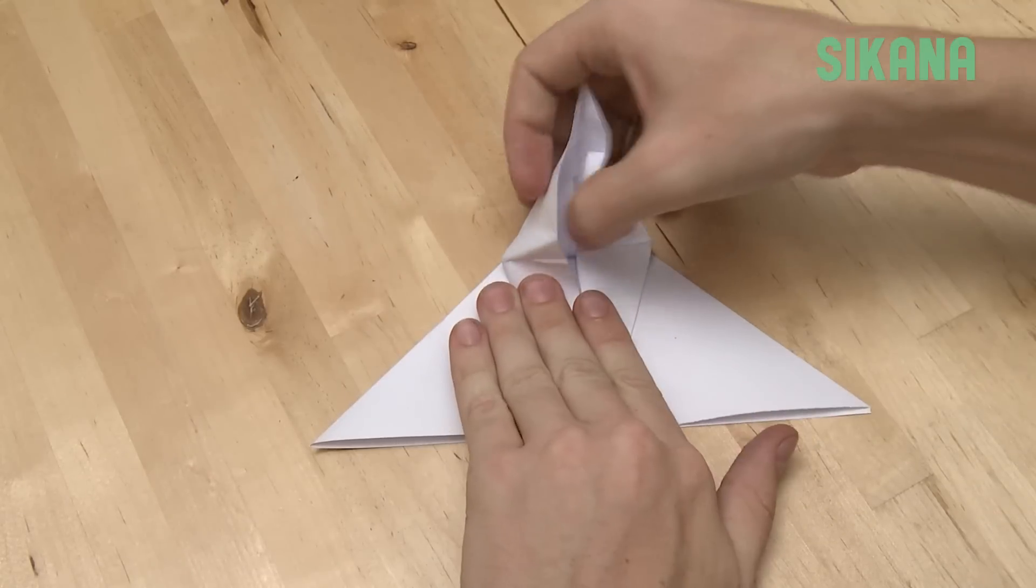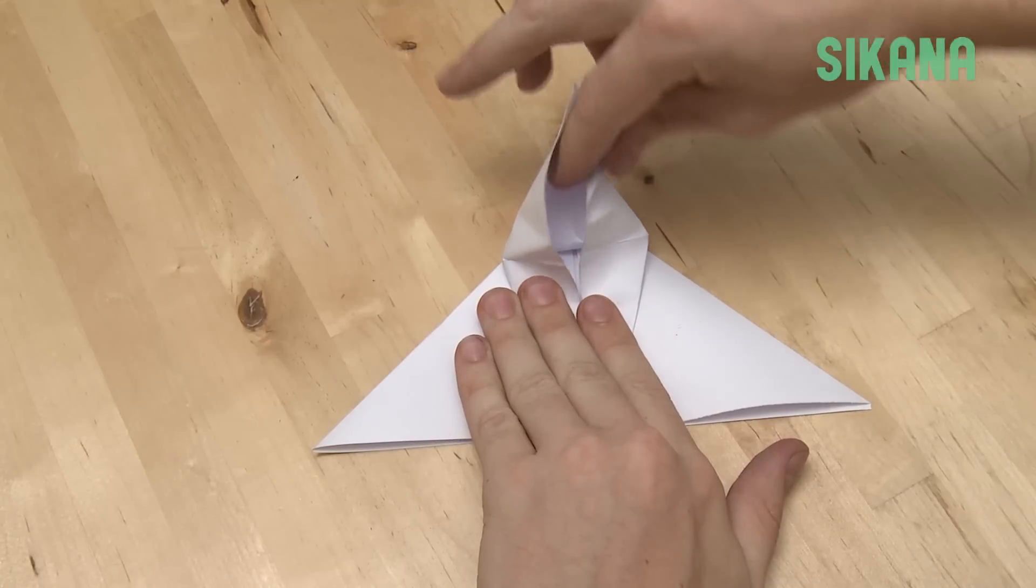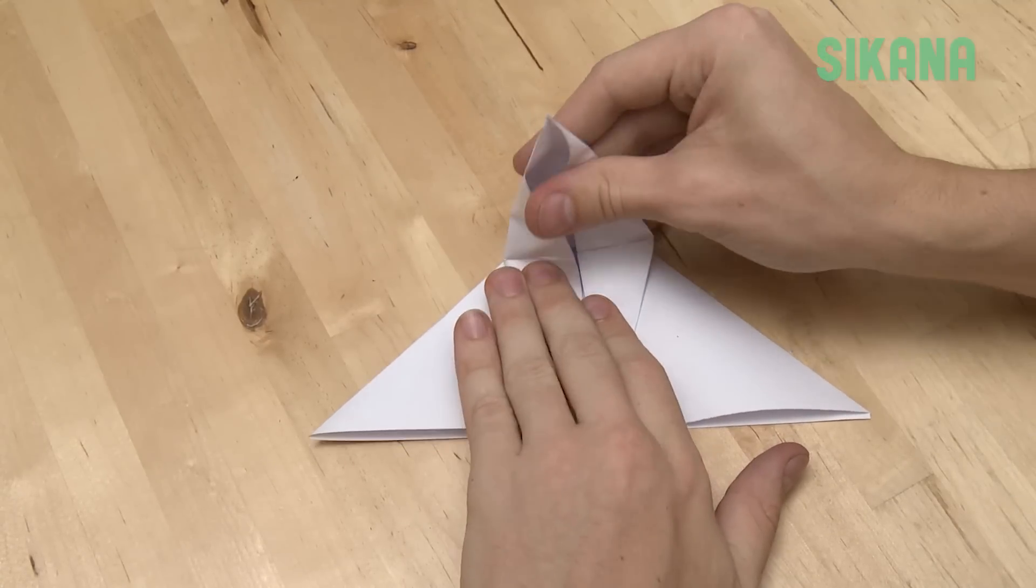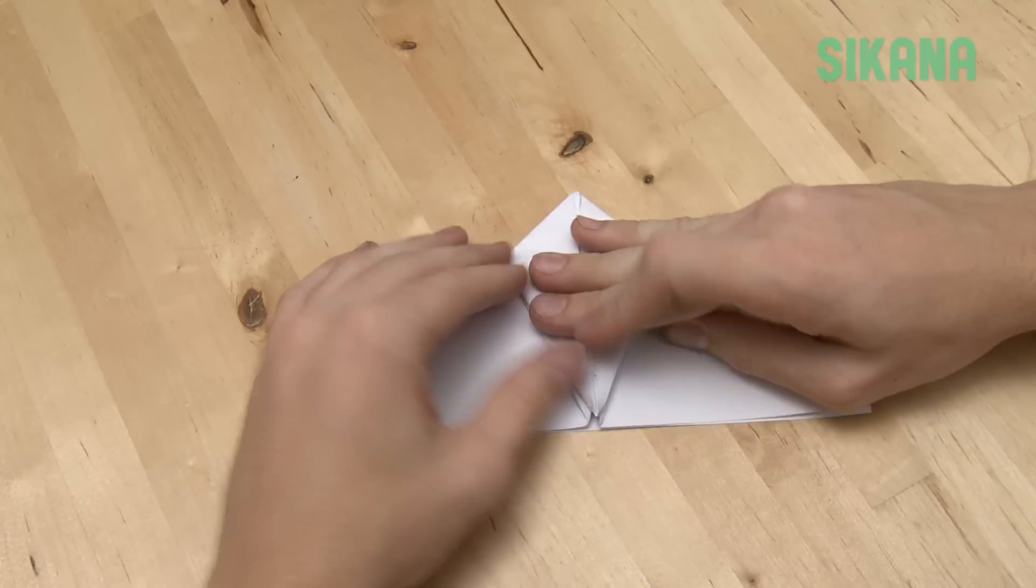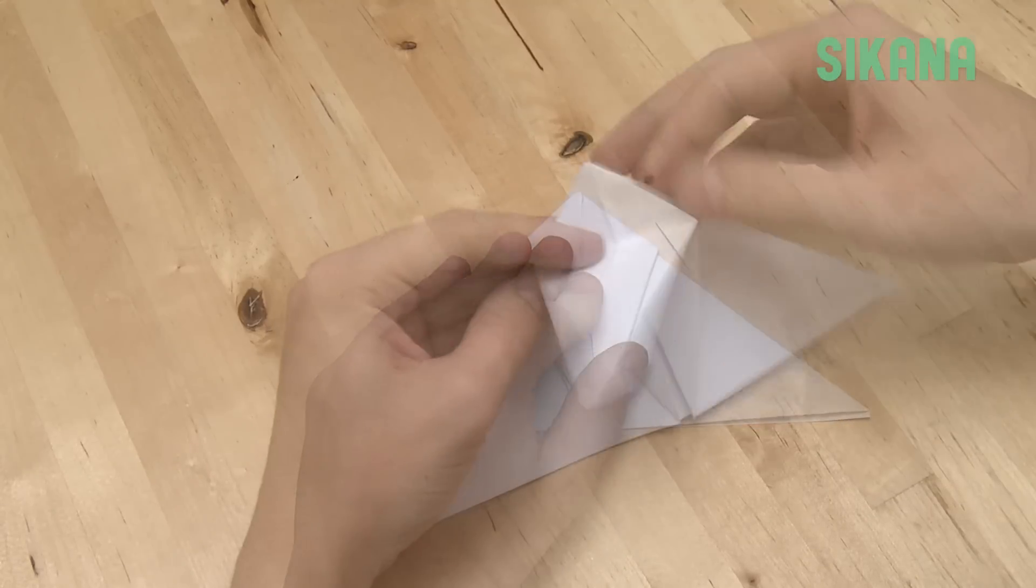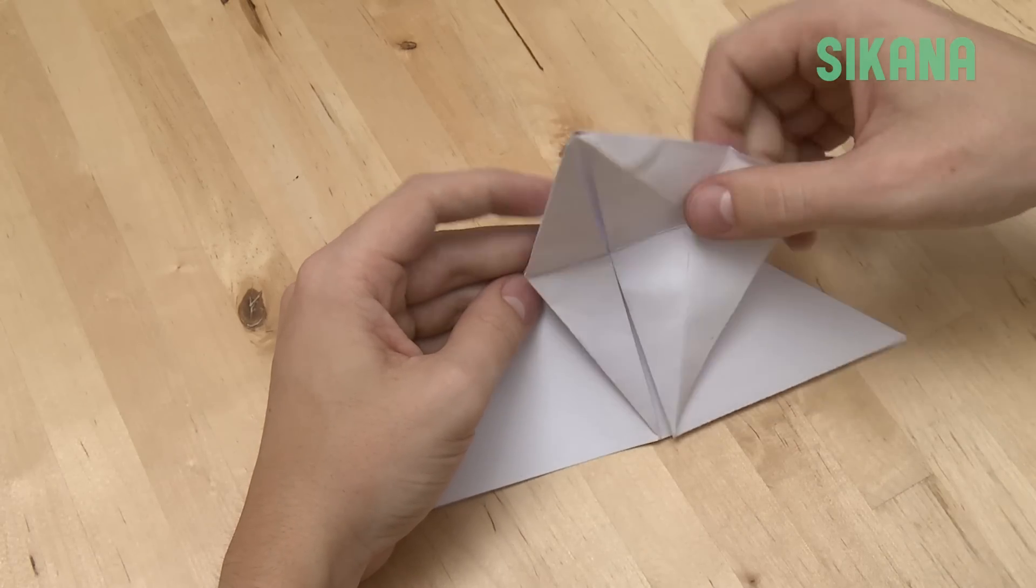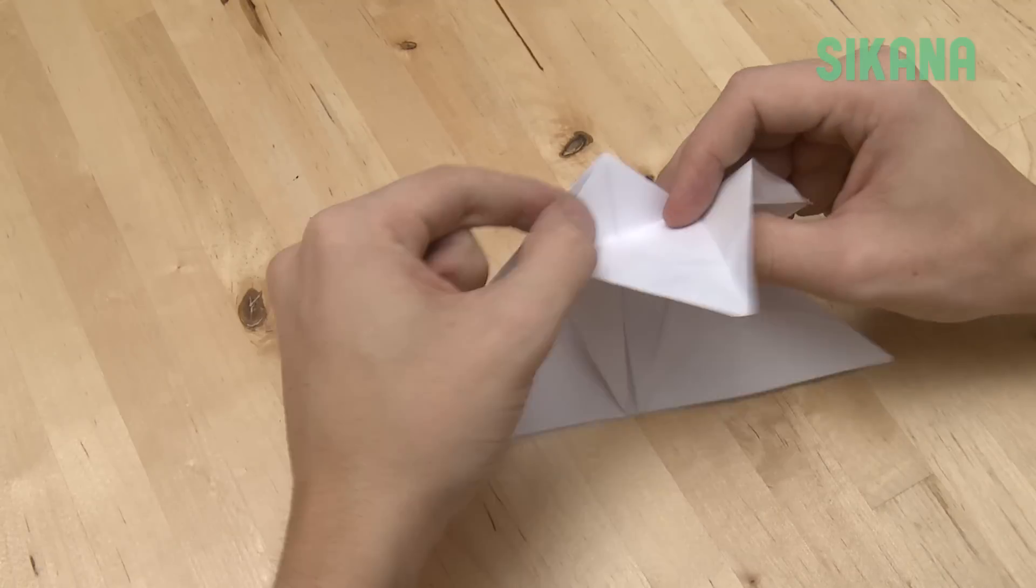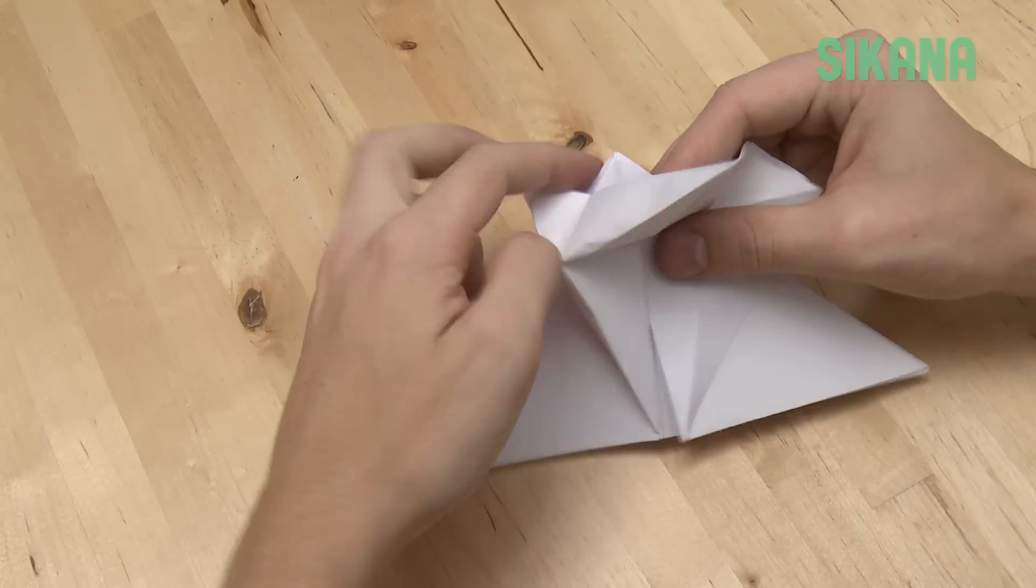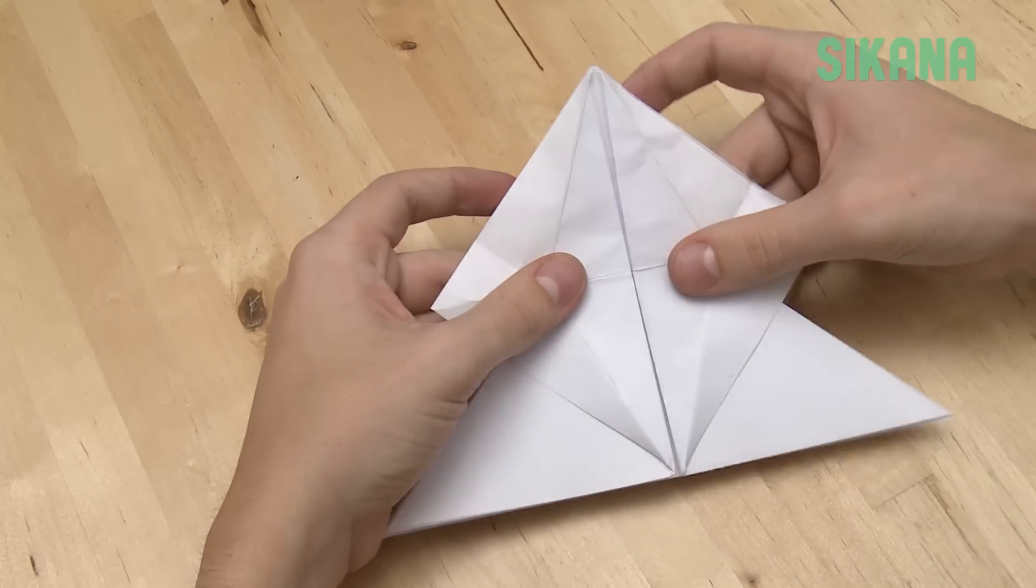This fold is found in many origami designs. Crease it well. Now open here, pull this end, and open this way. Repeat for the other side. You'll get this square shape in the center.